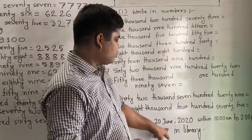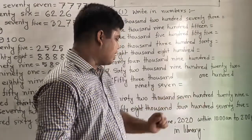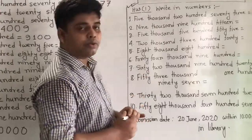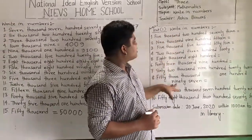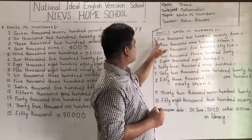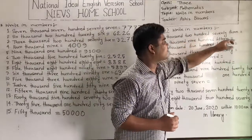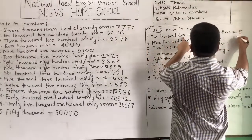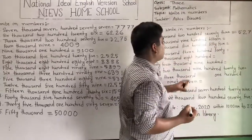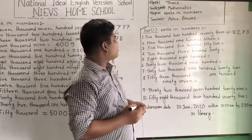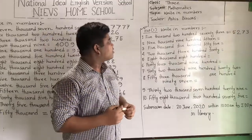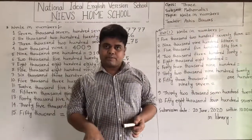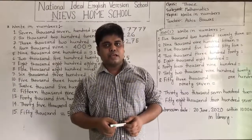Your submission date is 22/07/2020 within 10 am to 2 pm in the library. My dear students, HW is very important for you. At first pick up the question in your HW copy, then write the answer. For example, write number 1 and write 5,273, then give an equal sign and write the answer. Here 5,000 means write 5,273. This way write the other numbers. I hope you understood our today's lecture. Please do your assigned HW copy. Keep practicing at home and abide by your parents. See you soon. Till then, Assalamualaikum. Thank you.